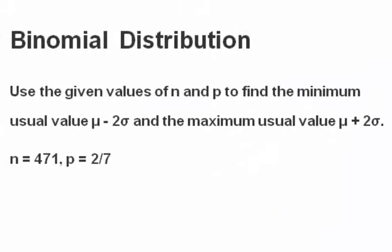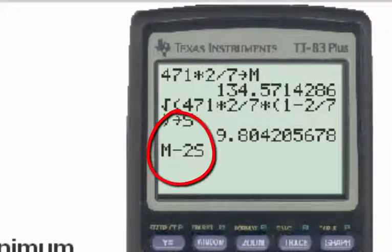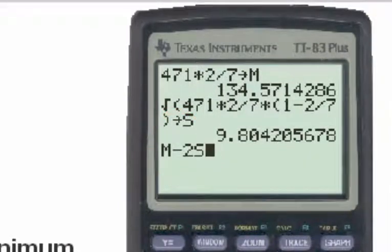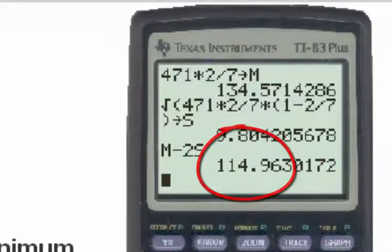Since we know that the minimum usual value is mu minus 2 standard deviations, mu minus 2 sigma, we'll now type into the calculator m minus 2s. Typing in m minus 2s and then hitting the enter key, here we have the minimum usual value.